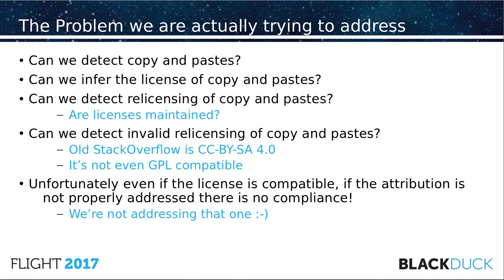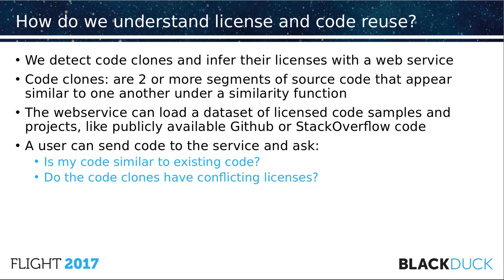Unfortunately, none of this will deal with the fact that you still have to attribute the source code. So what we're going to do is detect code clones and then infer their licenses. Code clones are basically two segments of source code that appear similar to one another under some kind of similarity function, like Euclidean distance or Levenshtein distance — anything like that, even bitwise distance.